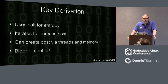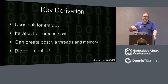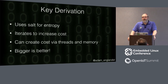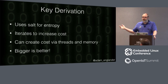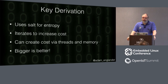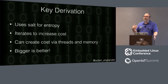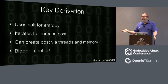Key derivation iterates to increase cost — it keeps rehashing over and over again, usually re-injecting the salt. The purpose is that it just takes time. With password hashing, you're trying to buy time. When someone steals your passwords, if you've used a good key derivation function, unless someone has used one of the top 100 passwords, they will not be able to crack it. For those top 100 passwords, a good key derivation function will give you up to three days to inform users to change their password everywhere they've used it. Some algorithms like Argon2i create additional cost via threads and memory — bigger is always better. My mantra: hash so it hurts.